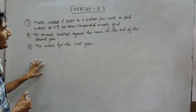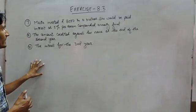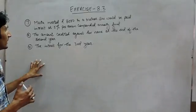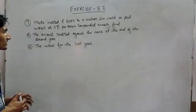Maria invested Rs. 8000 in a business. She would be paid interest at 5% per annum, compounded annually. You have to find the amount credited against her name at the end of the second year and the interest for the third year.